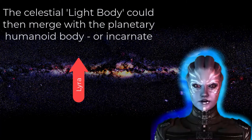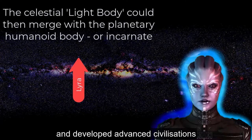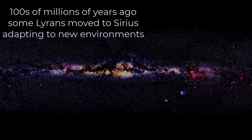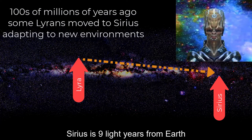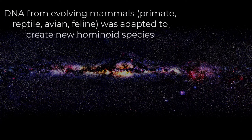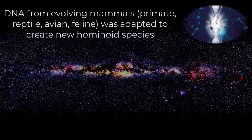Over time, Lyrans evolved and developed advanced civilizations. Hundreds of millions of years ago, some Lyrans moved to Sirius, adapting to the new environments. Sirius is 9 light-years from Earth. DNA from evolving mammals — primate, reptile, avian, feline — was adapted to create new hominoid species.